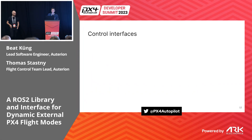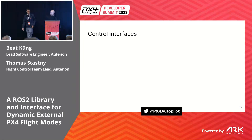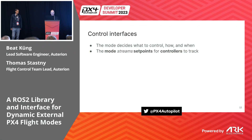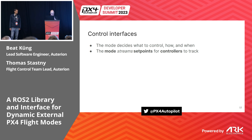Thomas now explains the control interfaces. A mode decides what we control, how we do it, and when we do it. A key point is that we're streaming setpoints — this is different from a command like 'do package delivery mission,' which might start an executor. Our control interfaces are things we're streaming directly to controllers from the mode, something that's actively trying to make the vehicle move and the controller should just follow that lead.